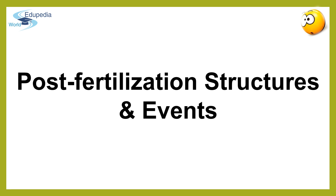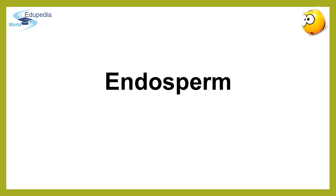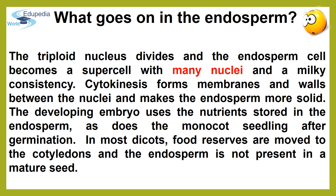Let's now begin with the post-fertilization structures and events, starting with the endosperm. Endosperm development precedes embryo development. The primary endosperm cell divides repeatedly to form a triploid endosperm tissue. The cells of this tissue are filled with reserve food material that provides nourishment to the growing embryo. The most common type of endosperm development involves successive nuclear divisions of the primary endosperm nucleus to form many free nuclei. This stage of endosperm development is called the free nuclear endosperm.